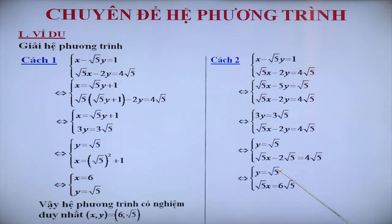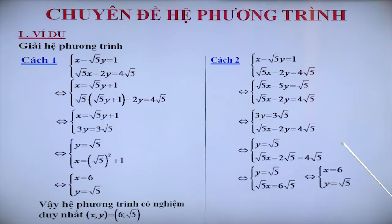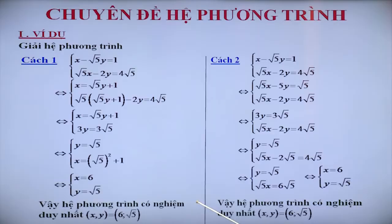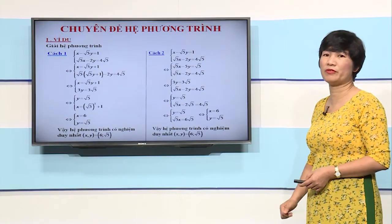Sau đó thế vào phương trình còn lại, chúng ta tìm được giá trị của X. Và chúng ta tìm được nghiệm của hệ đó là X bằng 6 và Y bằng căn 5. Rồi kết luận nghiệm của hệ phương trình. Chúng ta cũng thu được hệ phương trình có nghiệm duy nhất (X; Y) = (6; căn 5), hoàn toàn phù hợp với kết quả mà chúng ta giải bằng phương pháp thế.